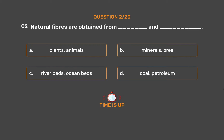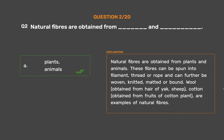The correct answer is Option A, Plants and Animals. Natural fibers are obtained from plants and animals. These fibers can be spun into filament, thread or rope, and can further be woven, knitted, matted or bound. Wool, obtained from the hair of yak and sheep, and cotton, obtained from the fruits of the cotton plant, are examples of natural fibers.